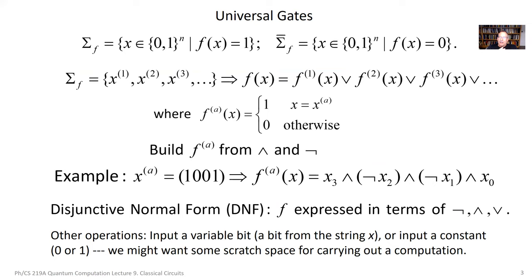The idea of universal gates is that I can take any boolean function and express it as a circuit — a sequence of very simple operations. In fact, these operations will be logic gates: logical operations which are themselves boolean functions that take an input of either one or two bits and produce a one-bit output. We take a boolean function of interest and decompose it into those simple operations. That's very useful if I want to build a machine that computes functions.